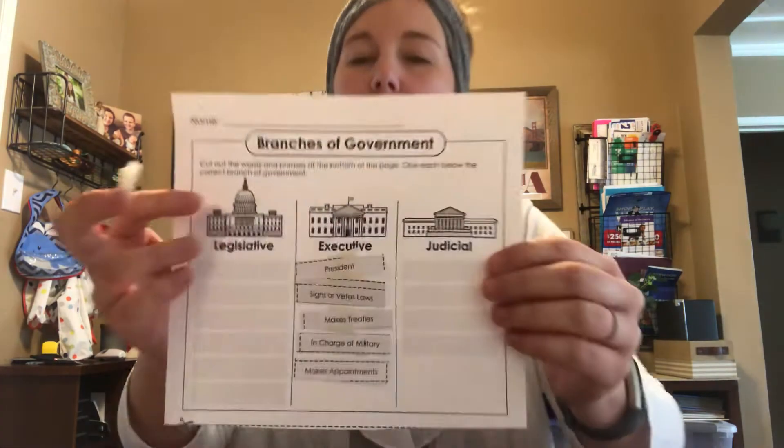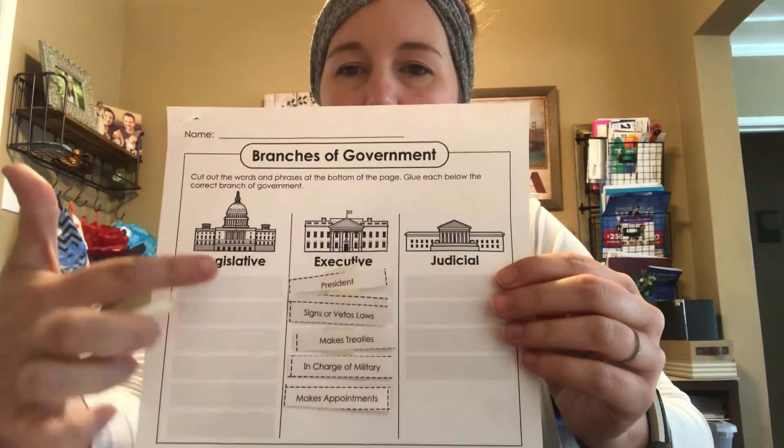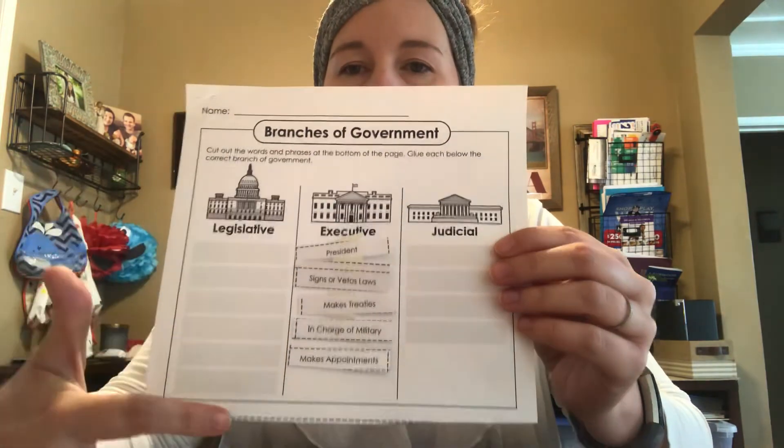We have all the jobs for our executive branch done. Now let's check out the legislative branch — they have a lot of work to do and a lot of people. We've done executive, so let's do legislative. We have several boxes here. First, the people in that group are the House of Representatives — let's go find that piece.